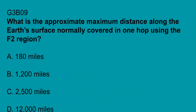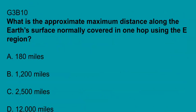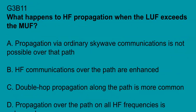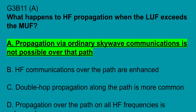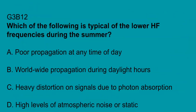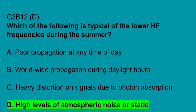G3B09: what is the approximate maximum distance along the Earth's surface normally covered in one hop using the F2 region? 2,500 miles. G3B10: what is the approximate maximum distance along the Earth's surface normally covered in one hop using the E region? 1,200 miles. G3B11: what happens to HF propagation when the lowest usable frequency exceeds the maximum usable frequency? Propagation via ordinary skywave communications is not possible over that path. G3B12: which of the following is typical of lower HF frequencies during the summer? High levels of atmospheric noise or static.